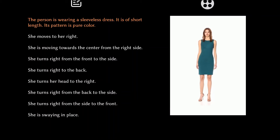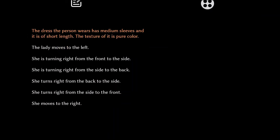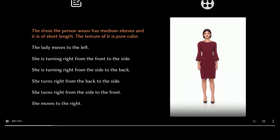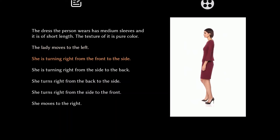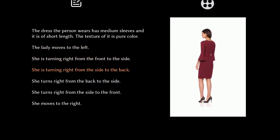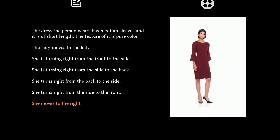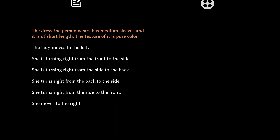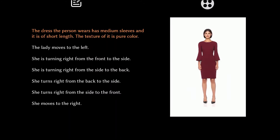Let's have a look at another example. The person wears a dress with medium sleeves — that is correct — and then she is turning right, from the side to the back, back to the side, then side to the front, and then she moves to the right. How good is that? Let's watch it again to see how well Text2Performer performs.